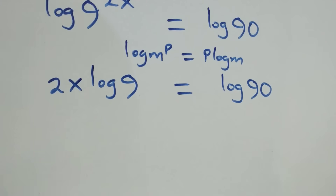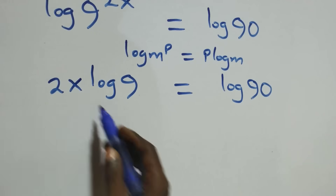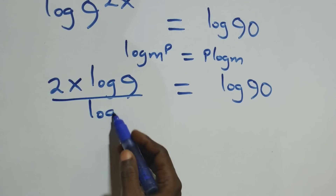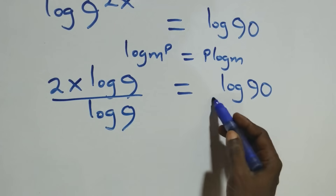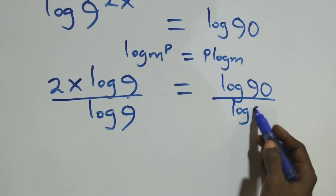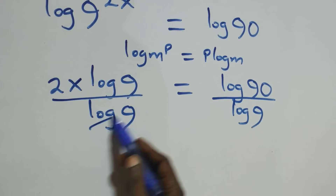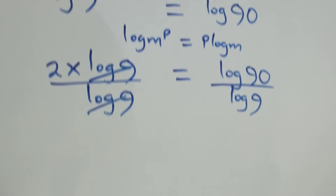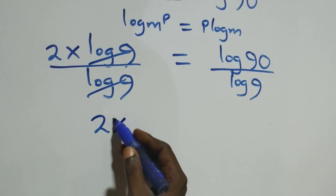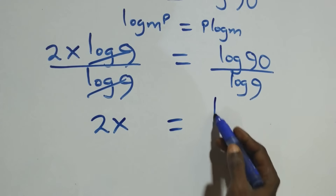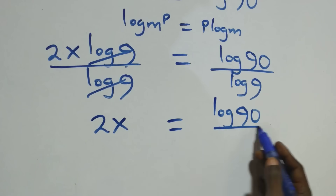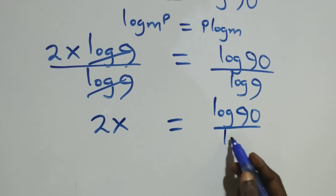The next step: we divide both sides by log 9, and also divide the other side by log 9. The log 9 terms cancel each other, and we are left with 2x equals log 90 over log 9.